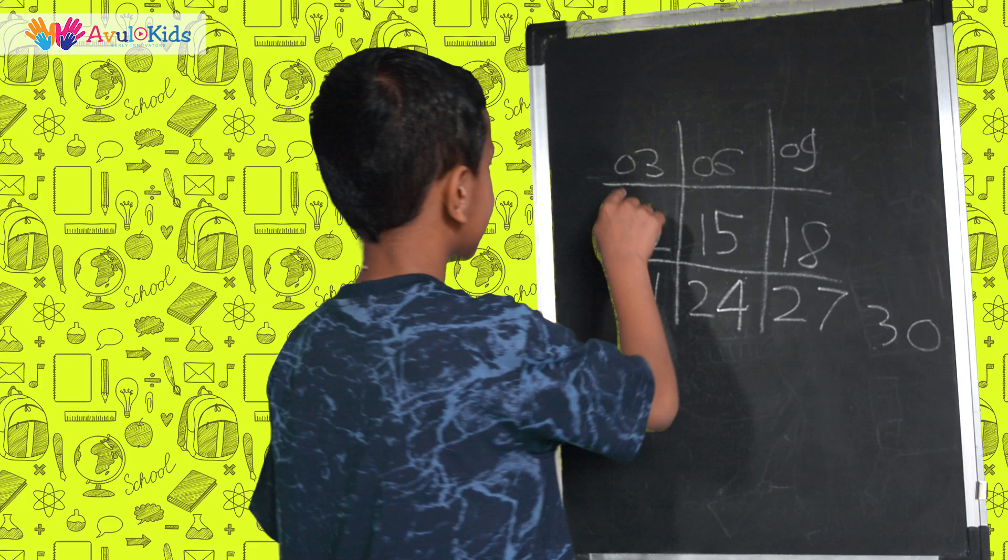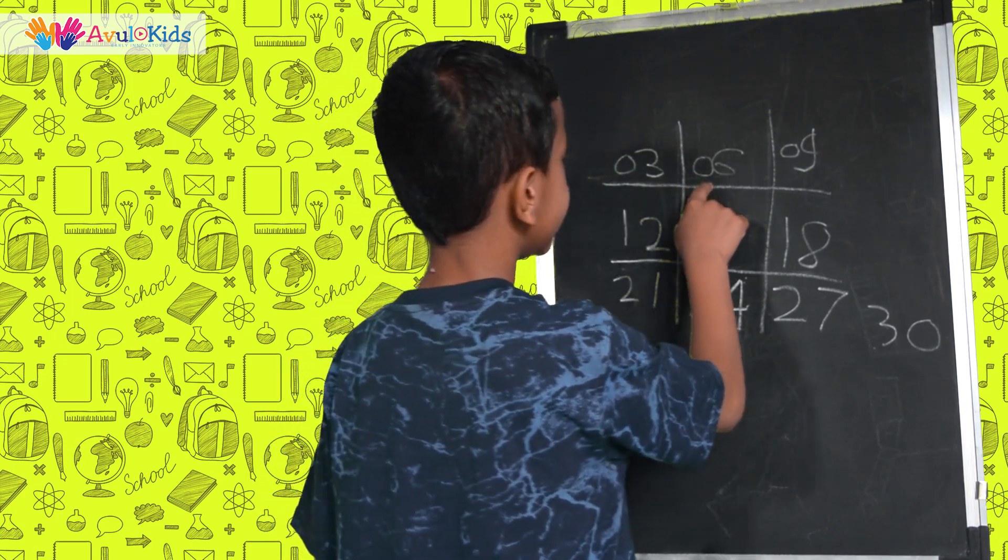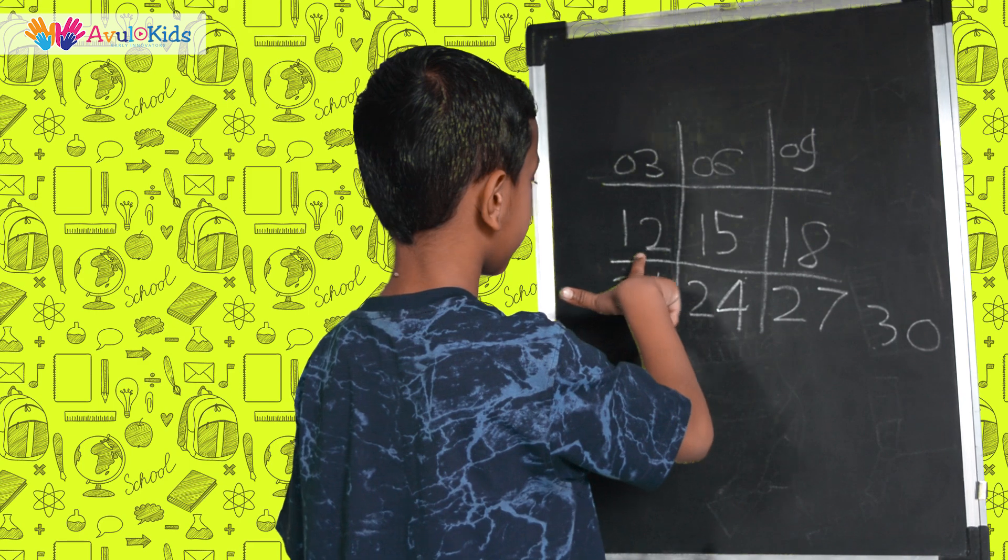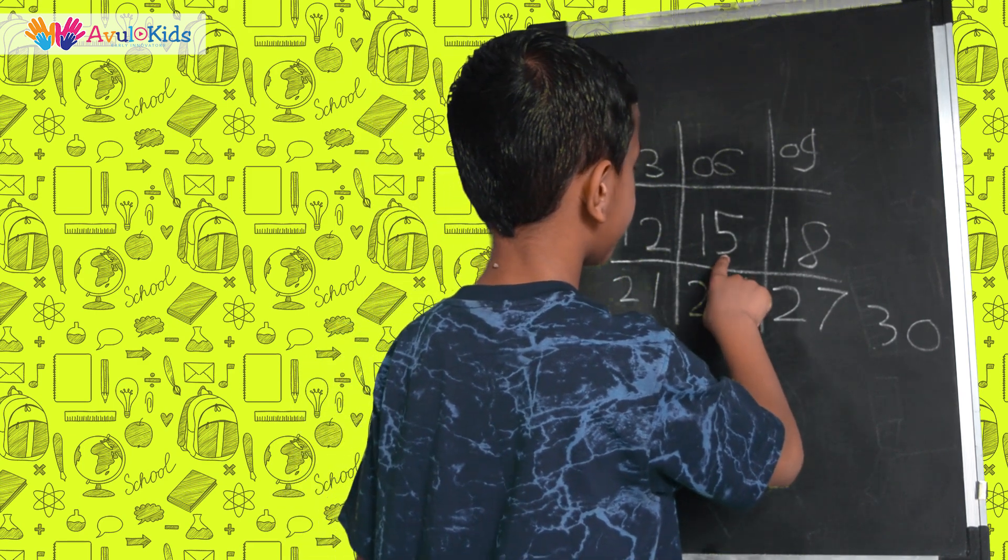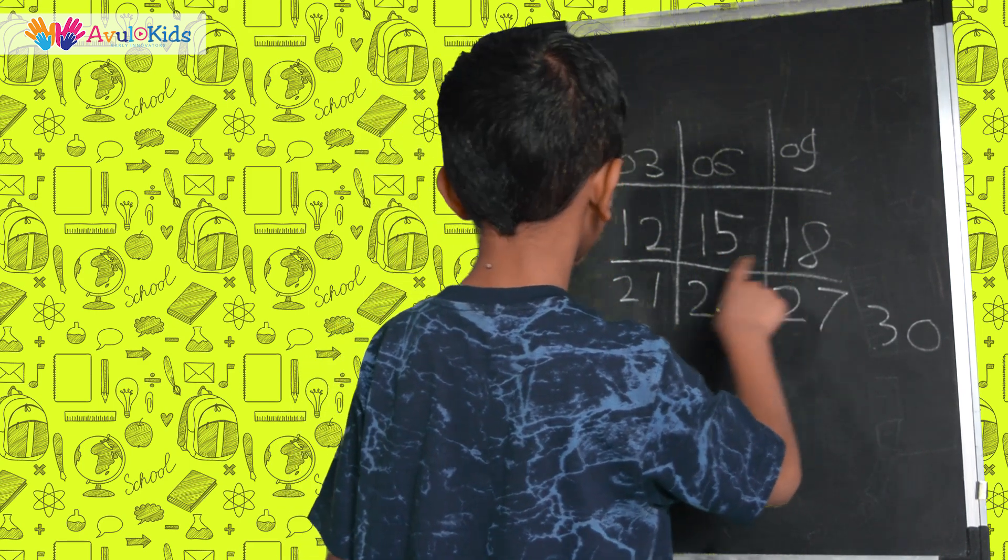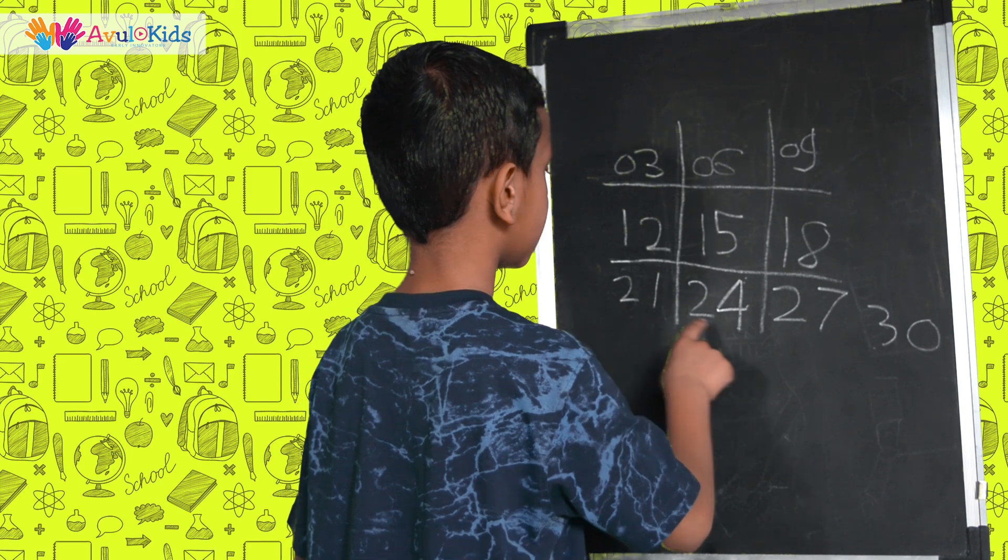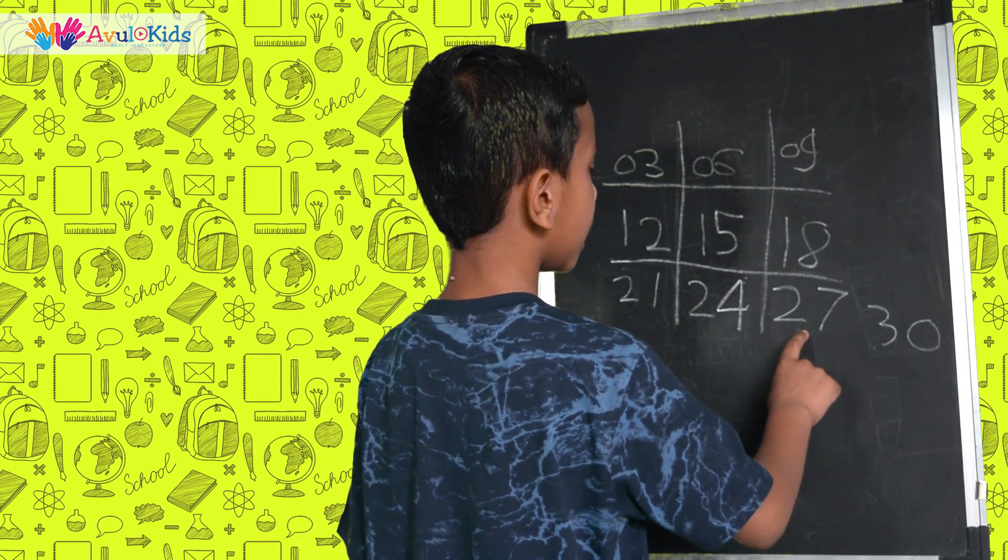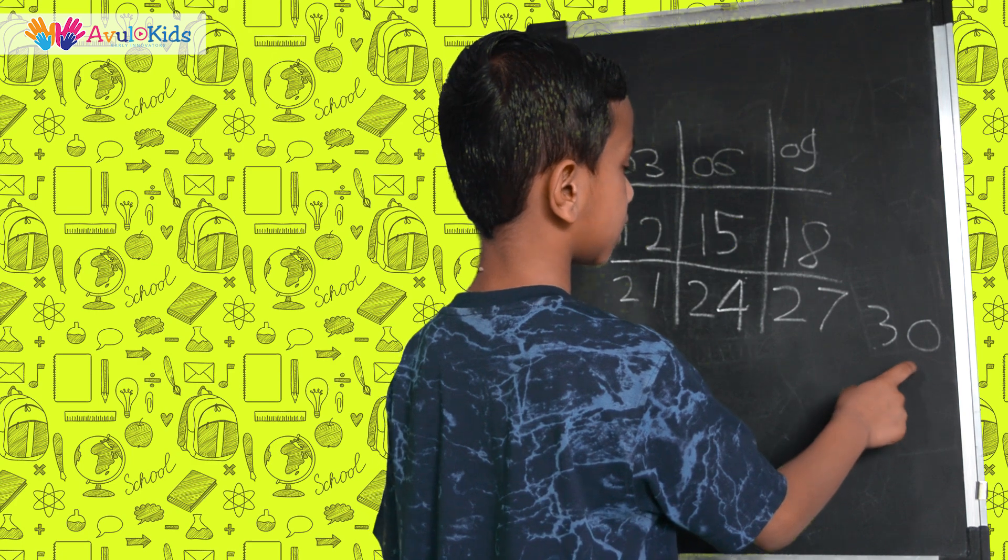Can you see? 3 ones are 3, 3 twos are 6, 3 threes are 9, 3 fours are 12, 3 fives are 15, 3 sixes are 18, 3 sevens are 21, 3 eights are 24, 3 nines are 27, 3 tens are 30.